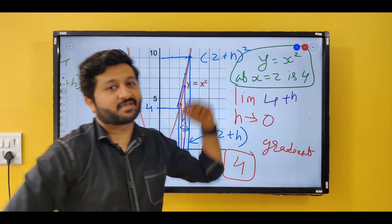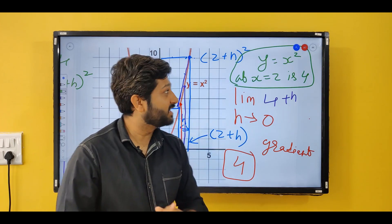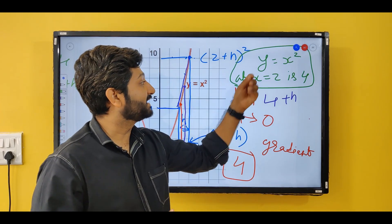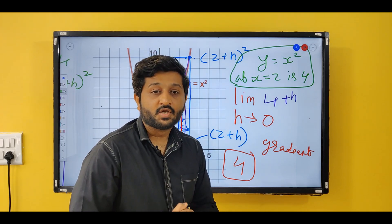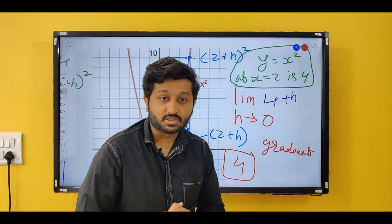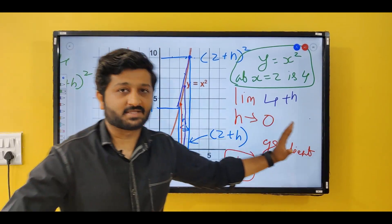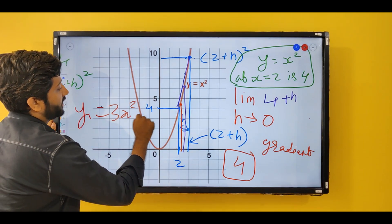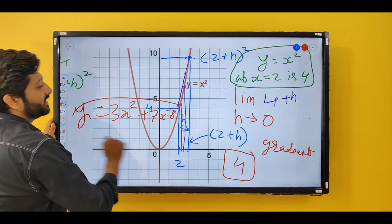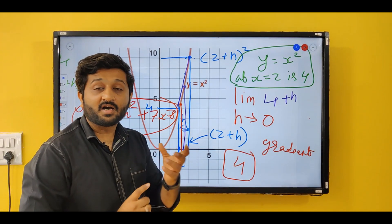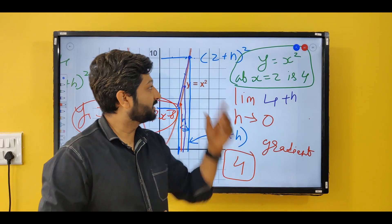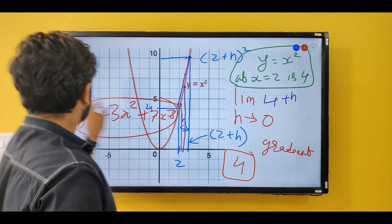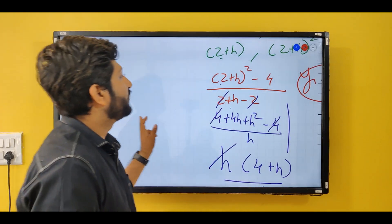So the gradient of y = x² at x = 2 is 4. Applied to the speed-time graph where y = x², the acceleration at x = 2 p.m. is 4 m/s². But this is a tedious method — for an equation like 3x² + 7x - 8 we need a shortcut formula. The method we just covered is known as the first derivative principle.